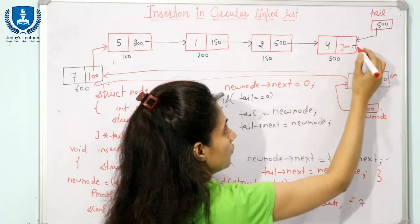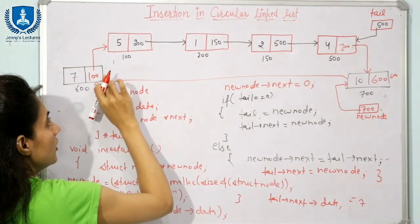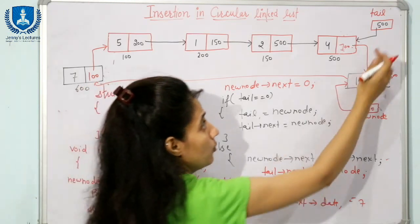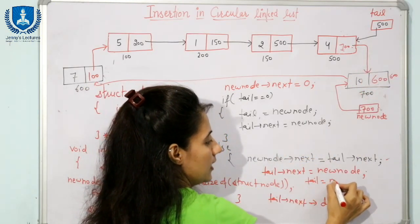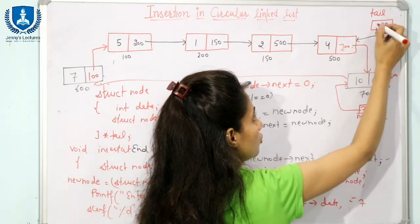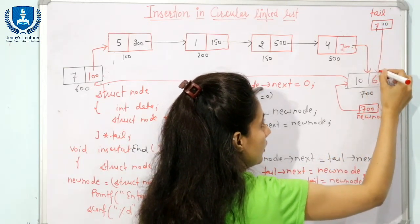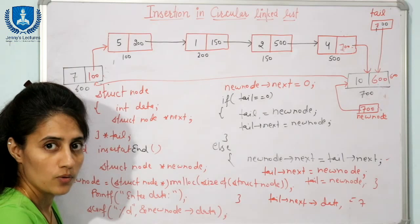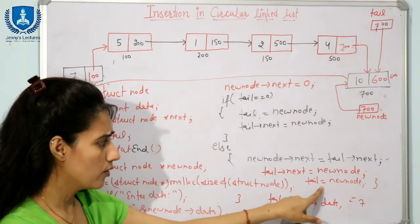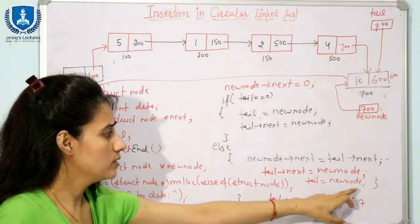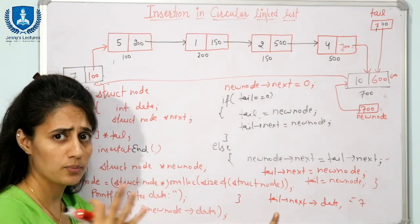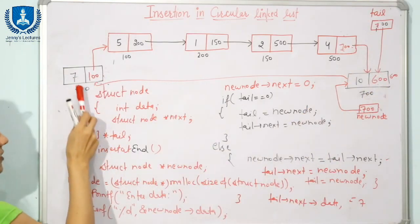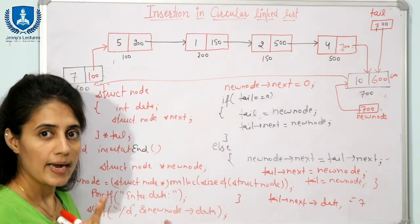Then write tail->next = new_node to link the old last node to the new node. Finally, tail = new_node to update the tail pointer to the new last node. These three lines go in the else block. To verify, print tail->next->data — since tail->next points to the first node (address 600), it should print 7.